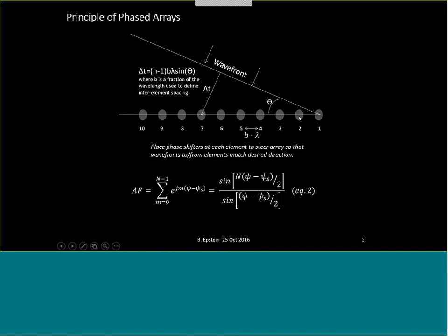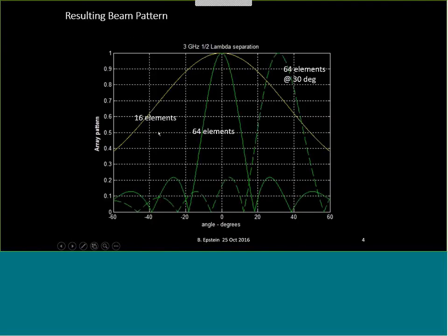Because the array is a finite dimension, without applying any weights we have, in effect, a rectangular windowing function, and as a result a sinc function describing the array factor — the overall transfer characteristic of the array. With only 16 elements spaced a half wavelength apart, you get a very fat beam. Increasing to 64 elements gives a much more narrow beam, as shown on the green curve.